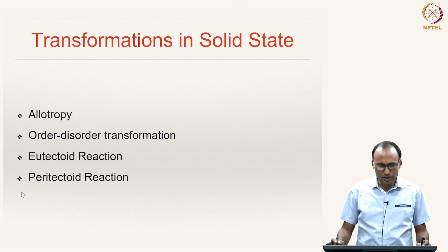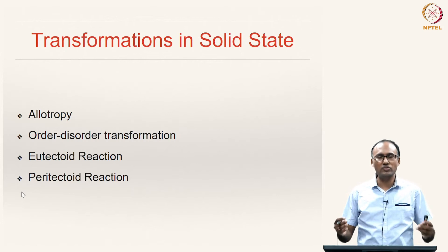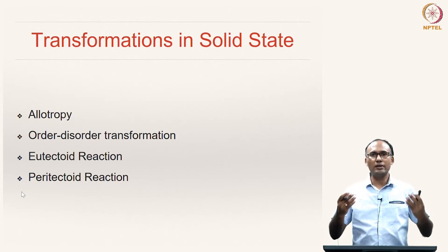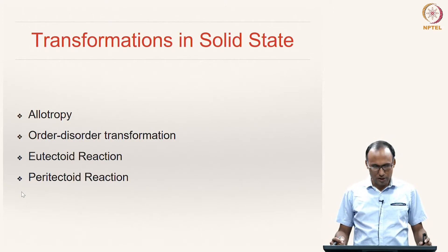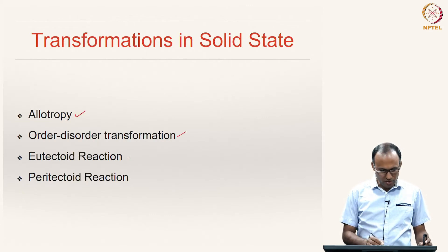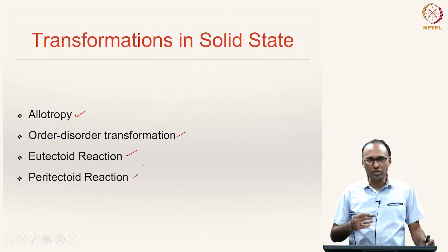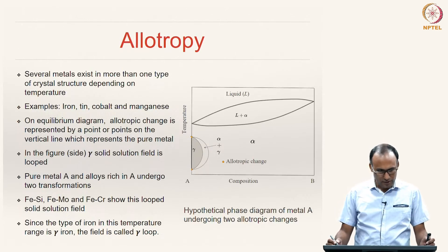Now let us look at the transformations that would happen in the solid state alone — that means once the material is solidified, there may be further transformations within the solid state. We are going to look at 4 important solid state transformations: allotropy, order-disorder transformation, and 2 special reactions — eutectoid reaction and peritectoid reaction — which give rise to new microstructures.